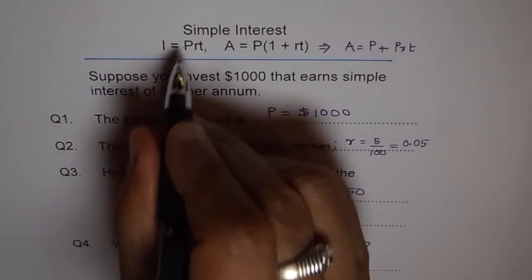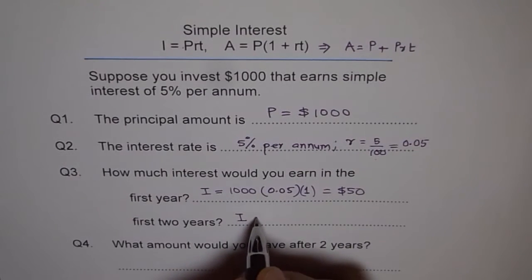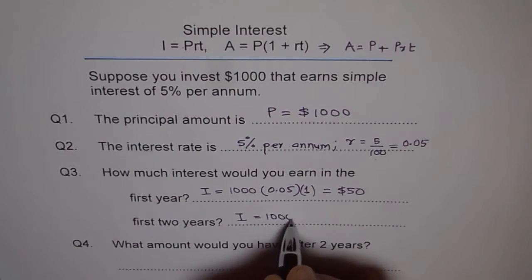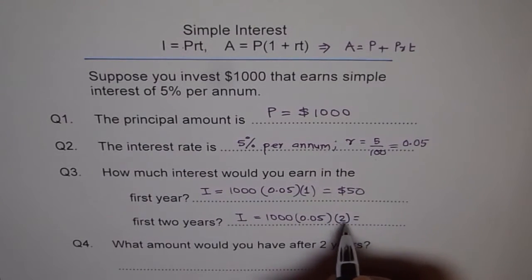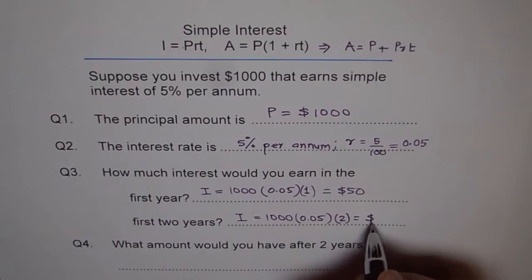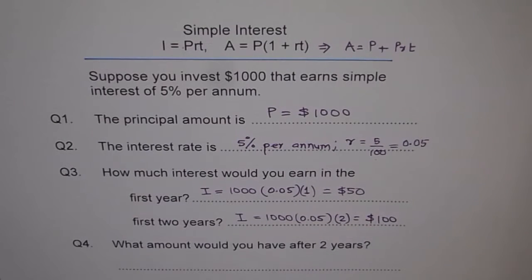First two years. If it is two years, then we use the same formula. I equals to PRT. I equals to P is principal $1000. Rate of interest 0.05. But the time is two years. So it will of course double and we will get $100.